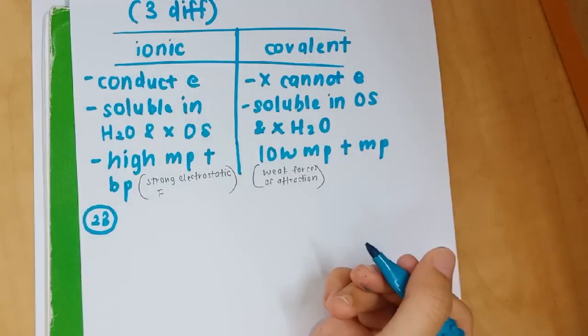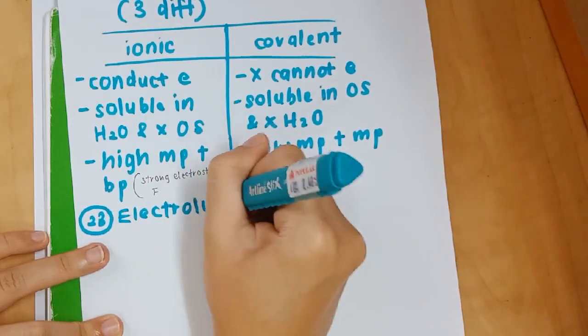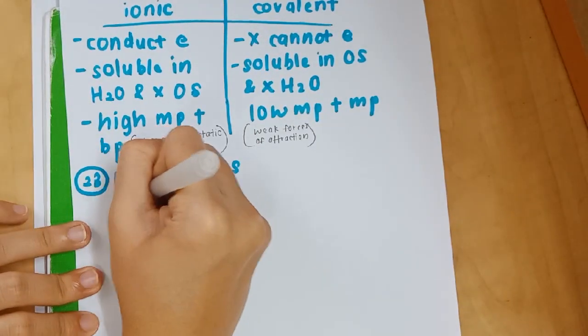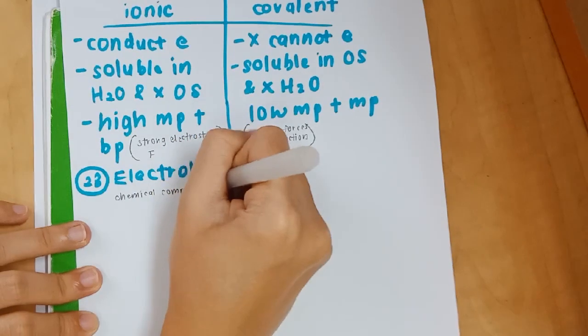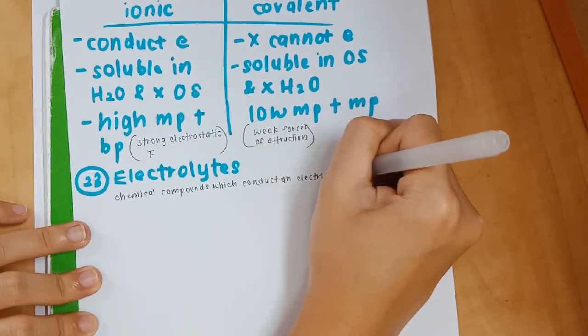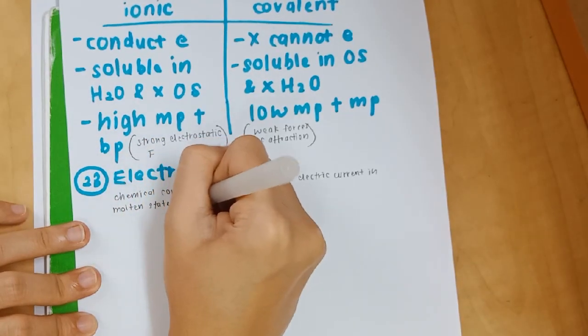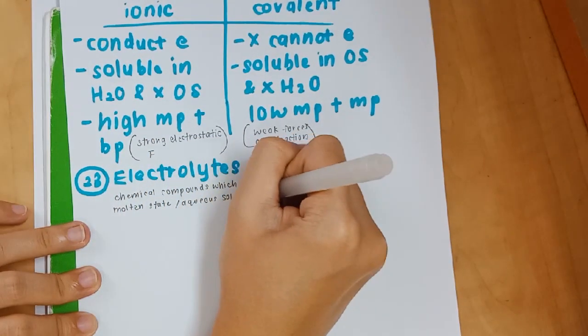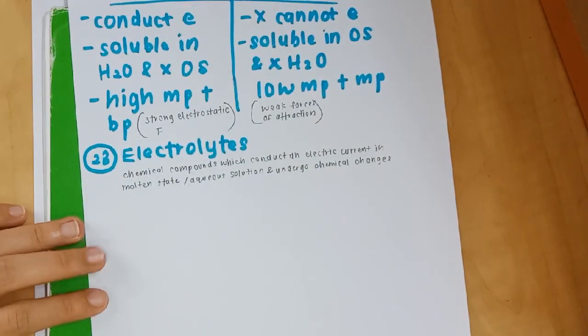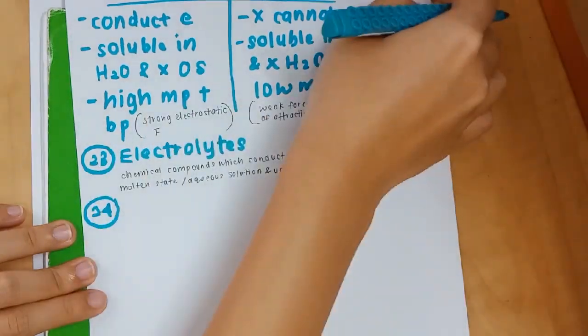Number 23: you need to know the definition of electrolytes. Apart from answering the question of definition, you need to know the definition of electrolytes because sometimes they will ask you to differentiate between electrolytes and non-electrolytes, and you can use the definition to differentiate. Electrolytes are chemical compounds which conduct an electric current in molten state or aqueous solutions and undergo chemical changes. This is very important - the last part. If it doesn't undergo chemical changes, then it is not an electrolyte.